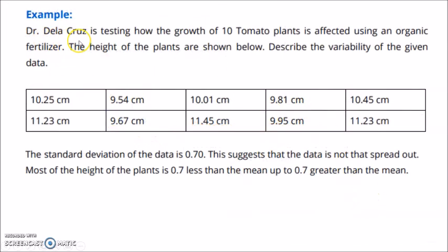Example. Dr. De La Cruz is testing how the growth of 10 tomato plants is affected using an organic fertilizer. The height of the plants are shown below. Describe the variability of the given data. So these are the heights of the plants. So we have 10 tomato plants. The standard deviation of the data is 0.770. So this suggests that the data is not that spread out.